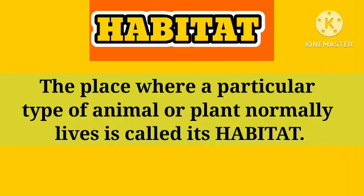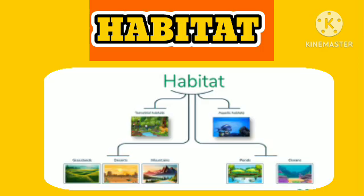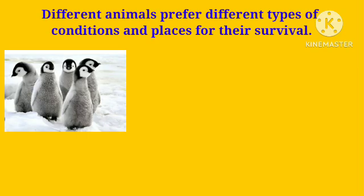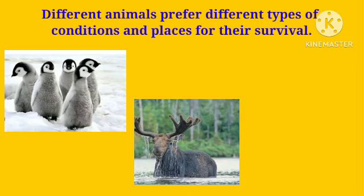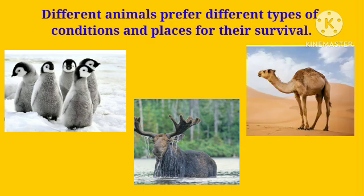We find various animals and plants living on the earth. The place where a particular type of animal or plant normally lives is called its habitat. There are numerous types of habitats on the earth. Different animals prefer different types of conditions and places for their survival.